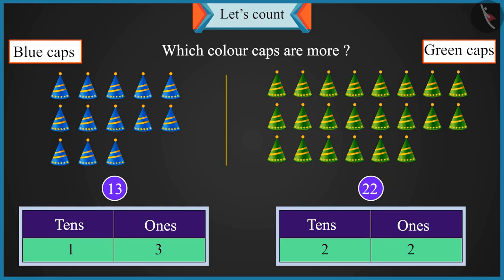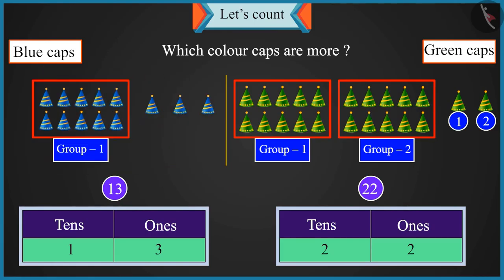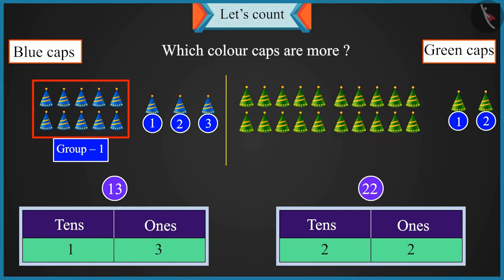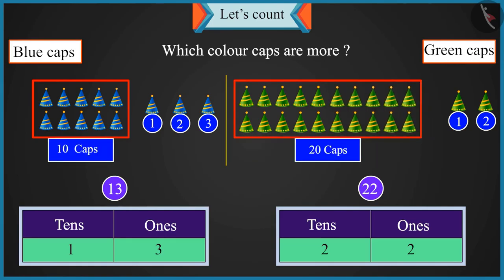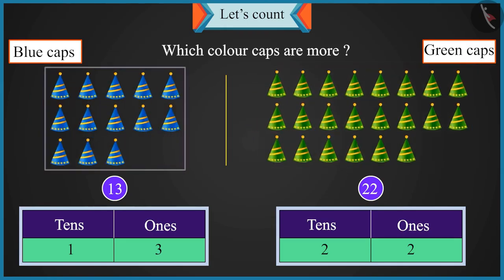Chotu, it's not like that. If you place twenty-two caps in two groups of ten, then two caps will be left. But in thirteen, you will be able to make only one group of ten and three caps will be left. Now tell me, will there be more caps in two groups of ten or in one group of ten? Two groups of ten means twenty caps will be more than ten caps. So twenty-two caps are more than thirteen caps.